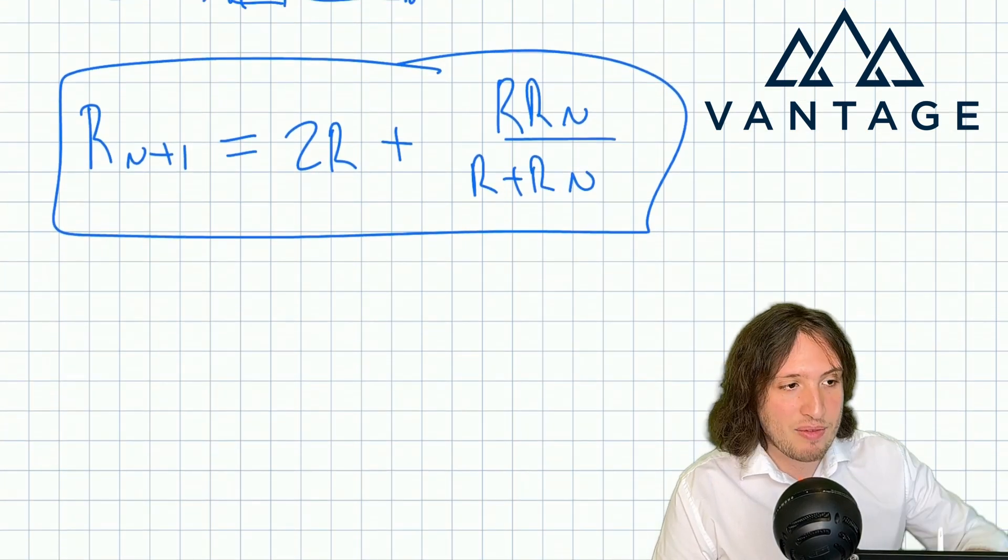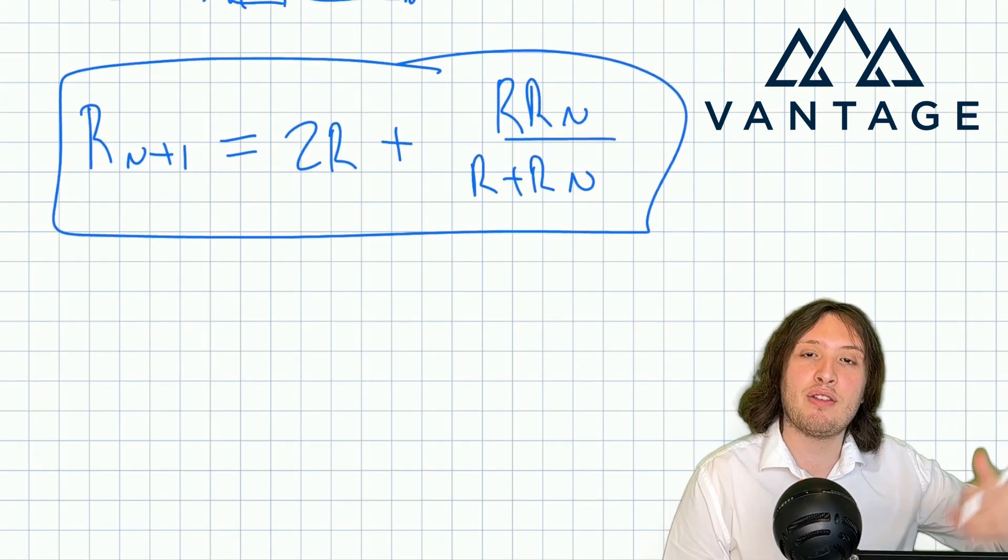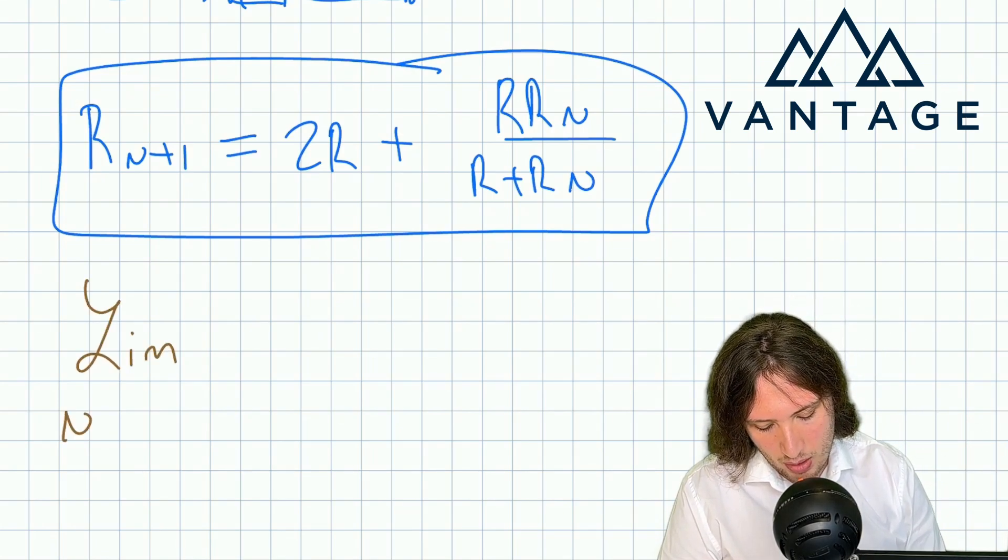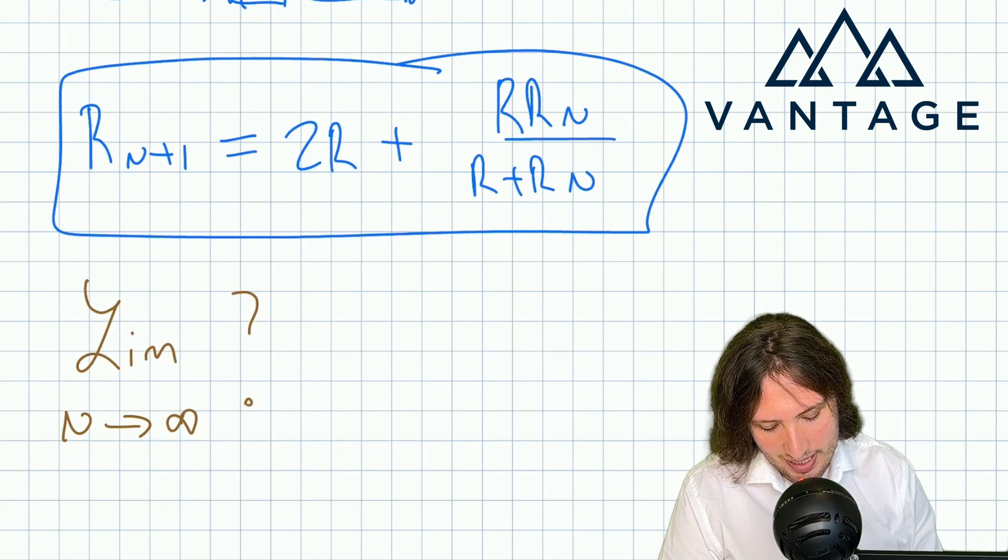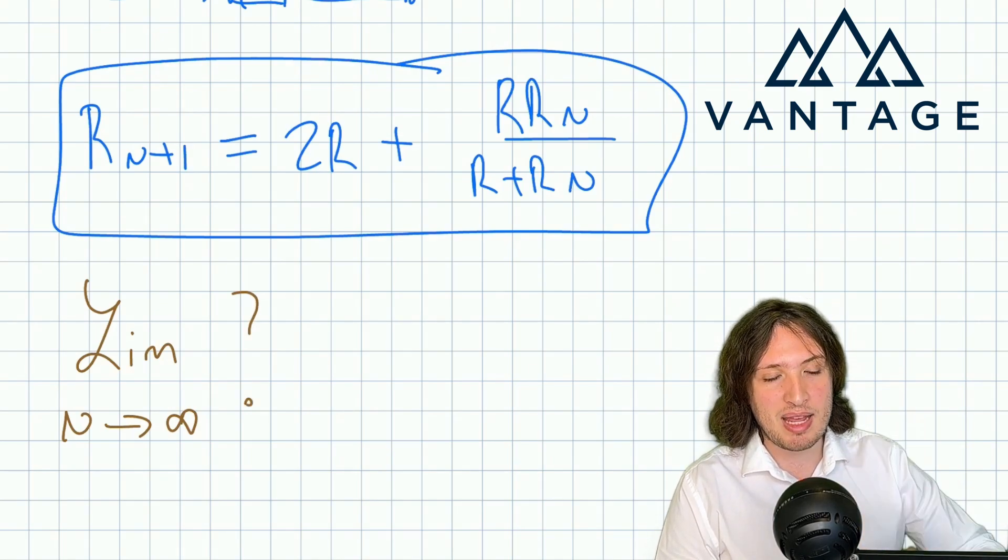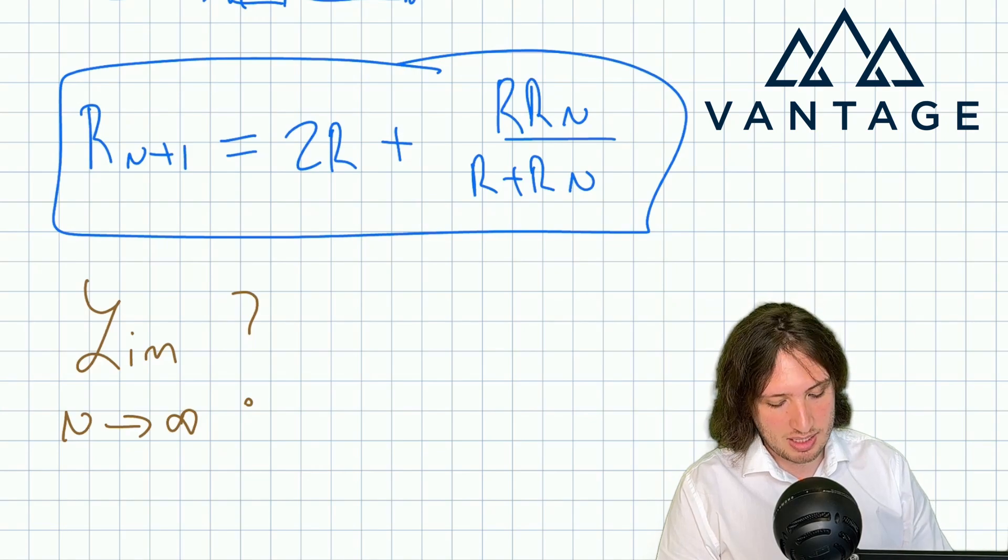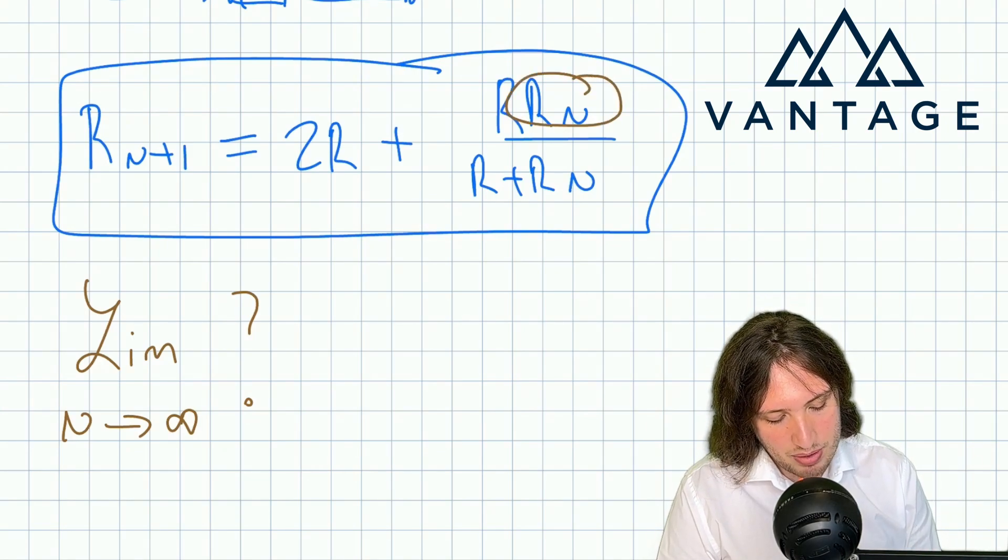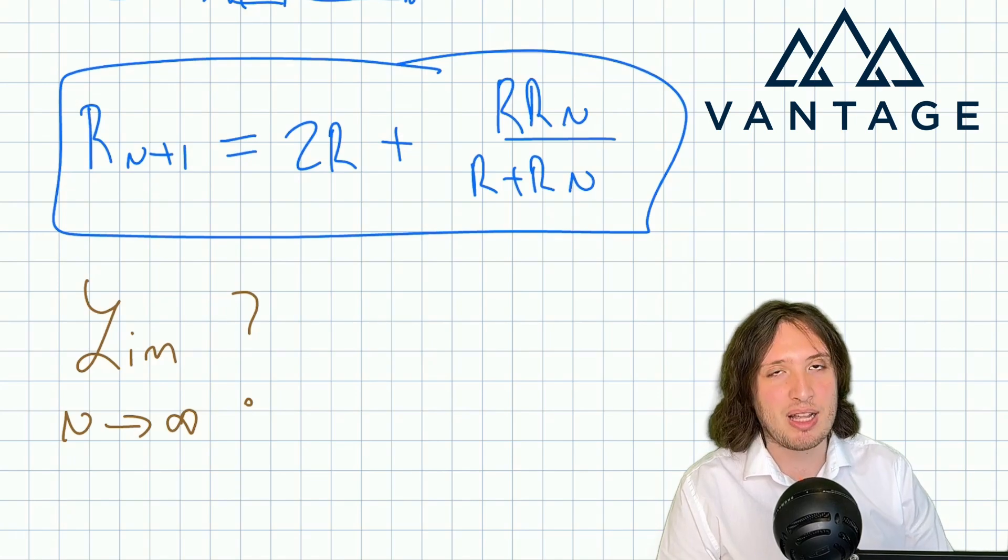So now we've got a handle on the sequence of effective resistances as we add more and more rungs. And what I want to know about is a limit as n goes to infinity. Now when it comes to applying limits to a recursion, the key idea is that if n goes to infinity, both Rn and Rn+1 have settled to this limit value.